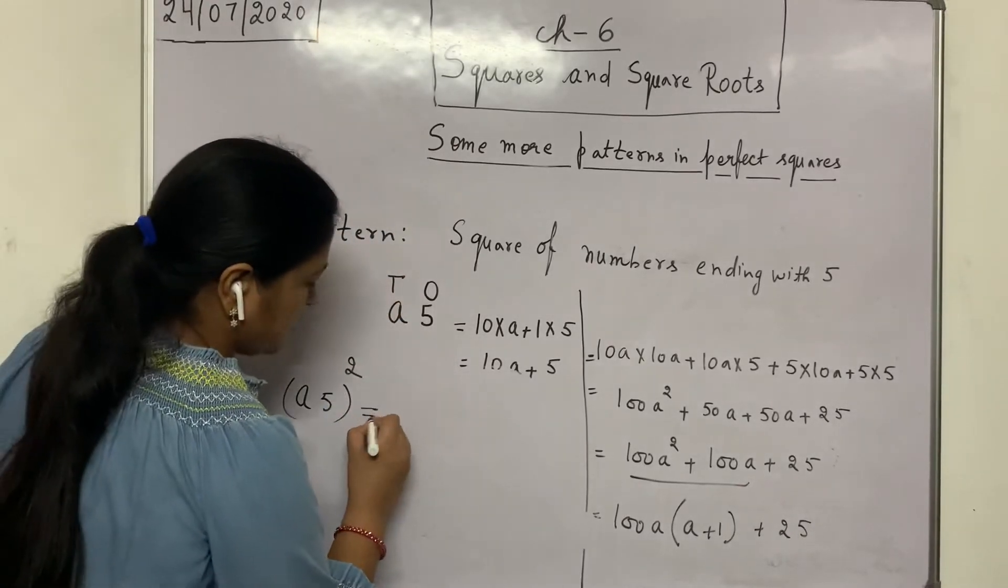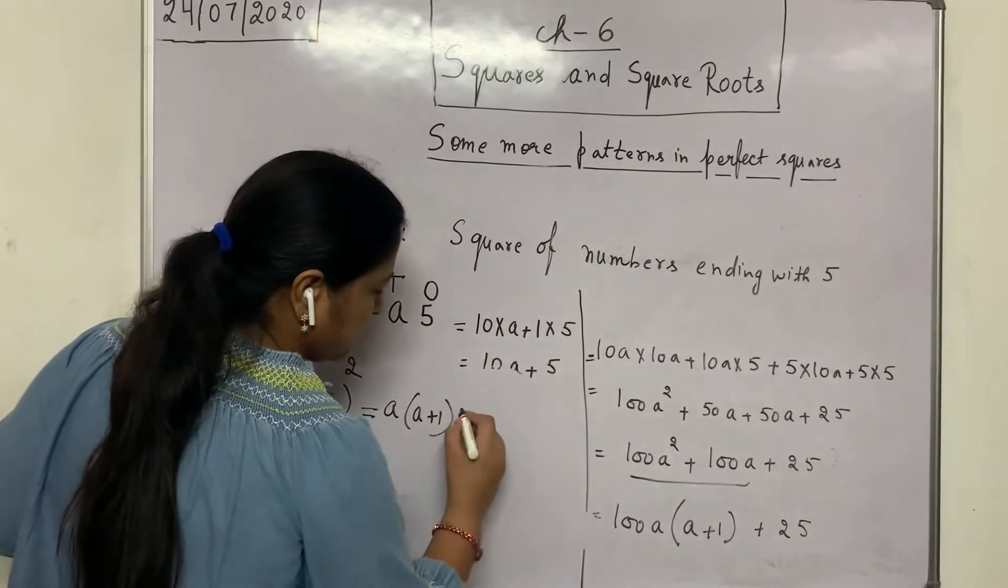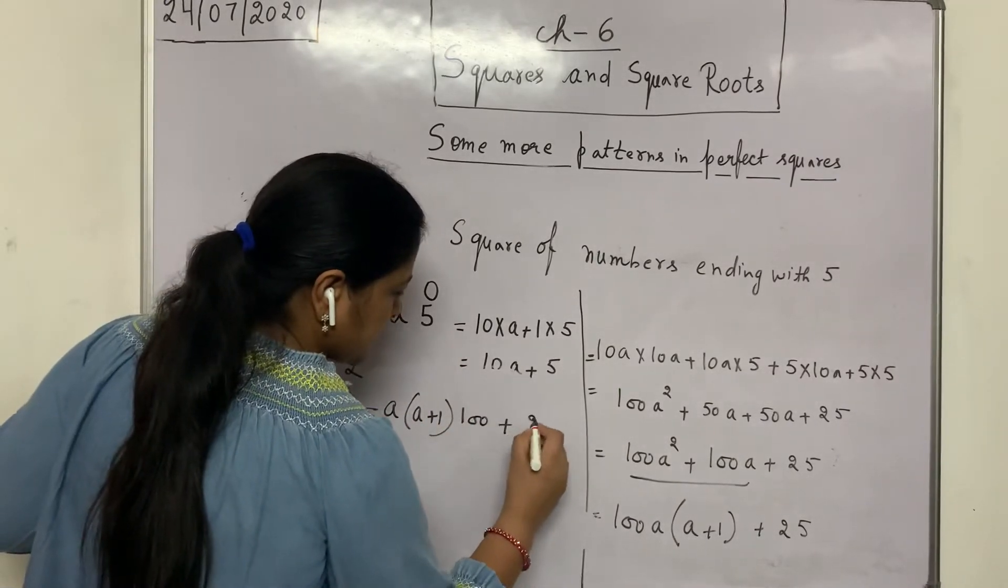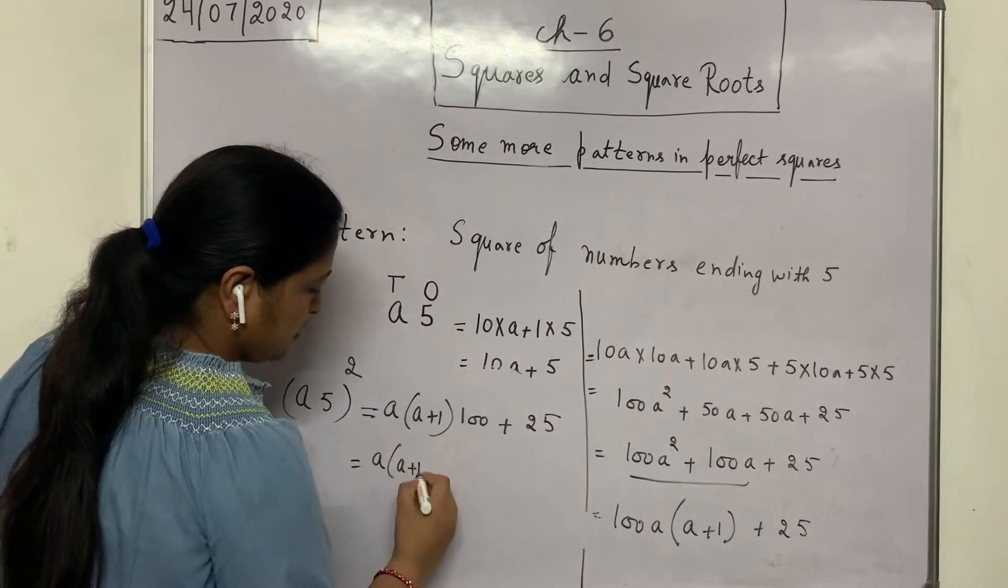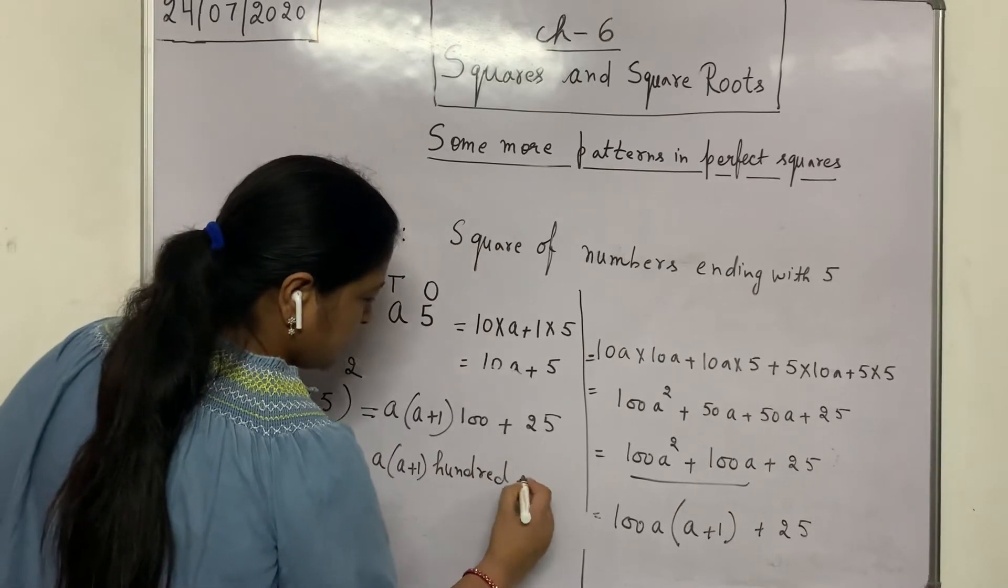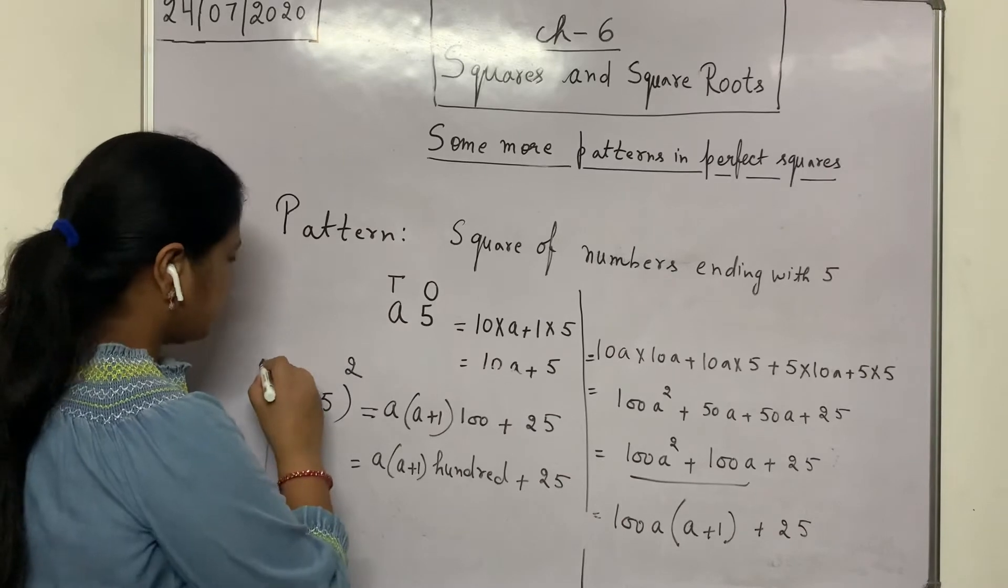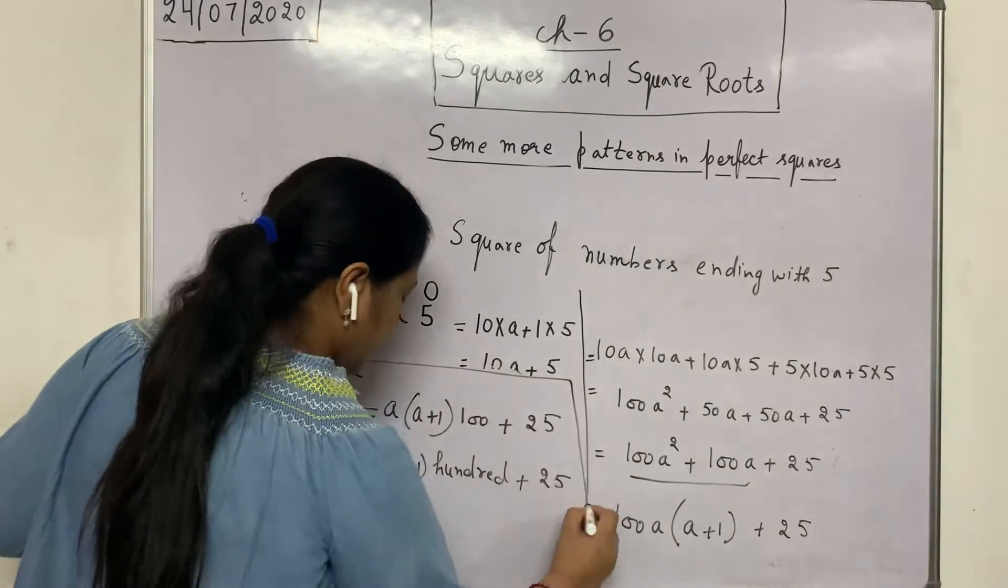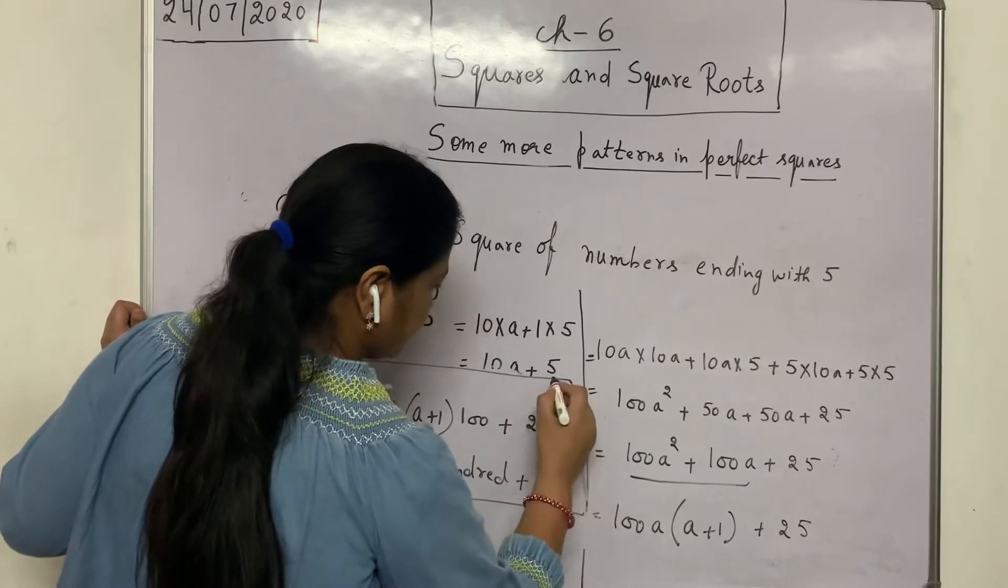It is equal to a into a plus 1, 100 plus 25. A into a plus 1, 100 plus 25. But this pattern is working only for the numbers ending with 5 only.